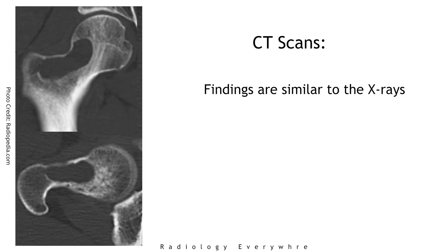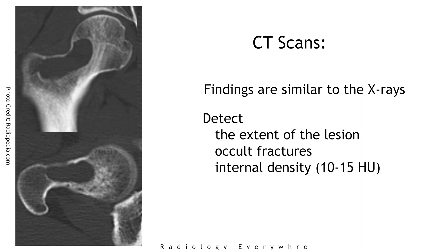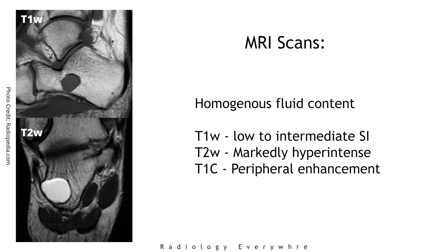CT findings are very similar to the x-rays. The main advantage is that you can characterize the extent, detect occult fractures, and assess the internal density, which is usually between 10 to 15 Hounsfield units.